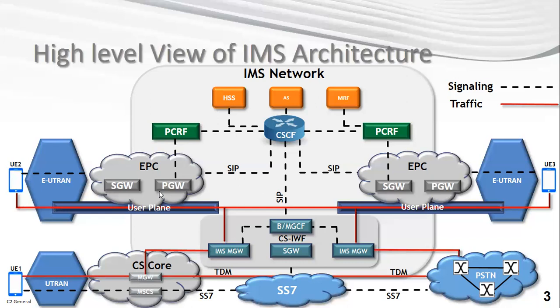The architecture of VoLTE includes the IMS network, which has the CSCF, PCRF, HSS, application servers, and the MRF. All of this is part of the VoLTE architecture.